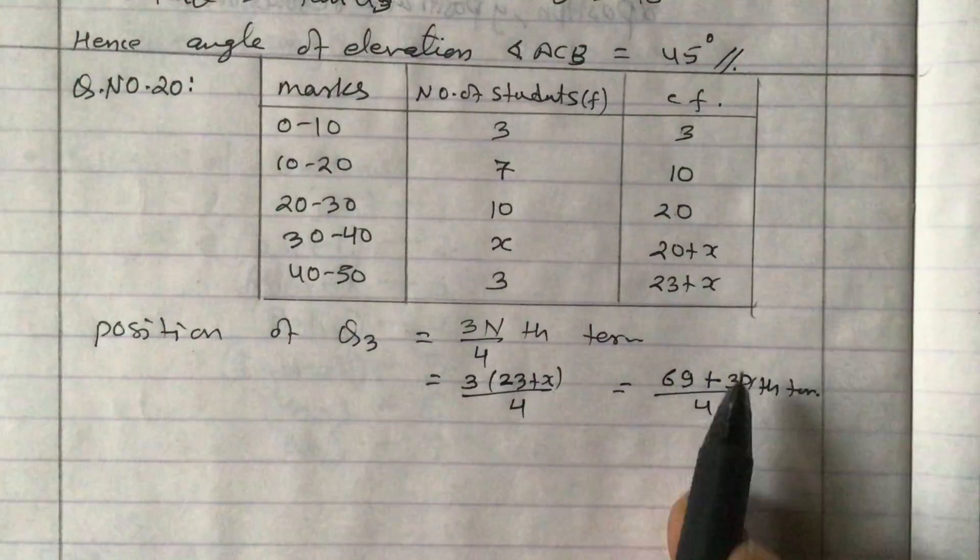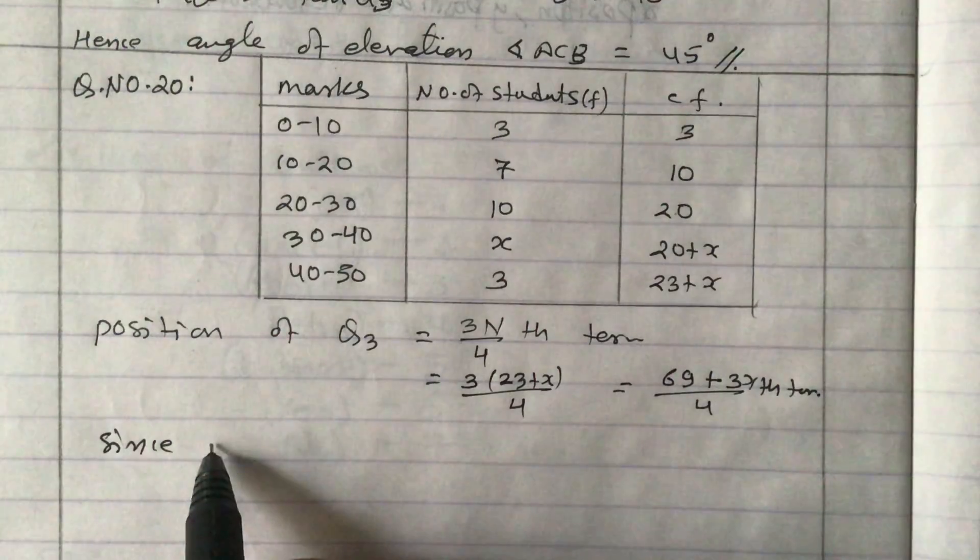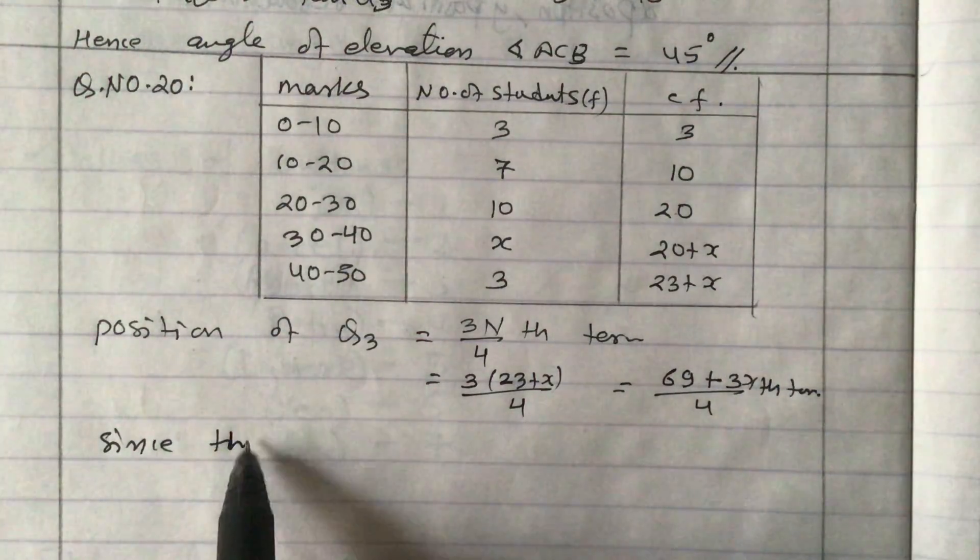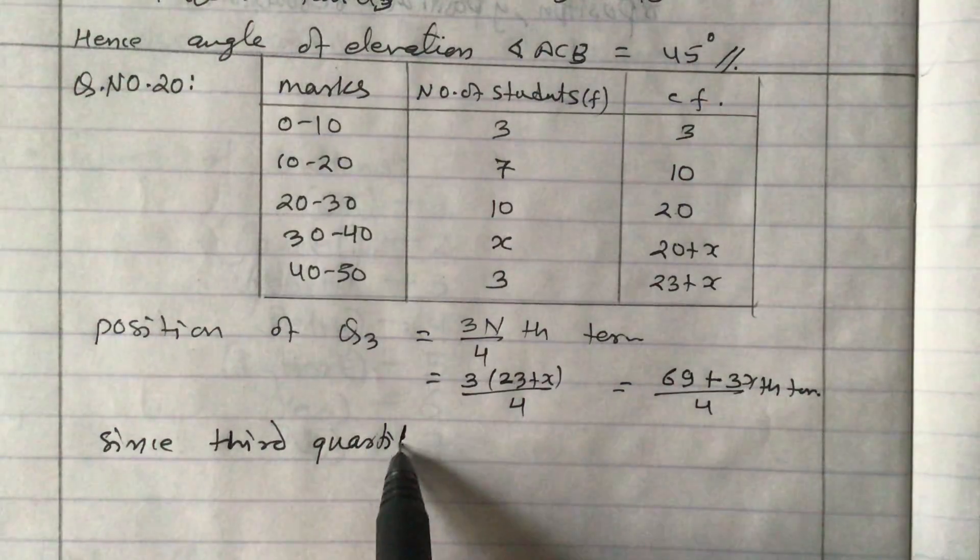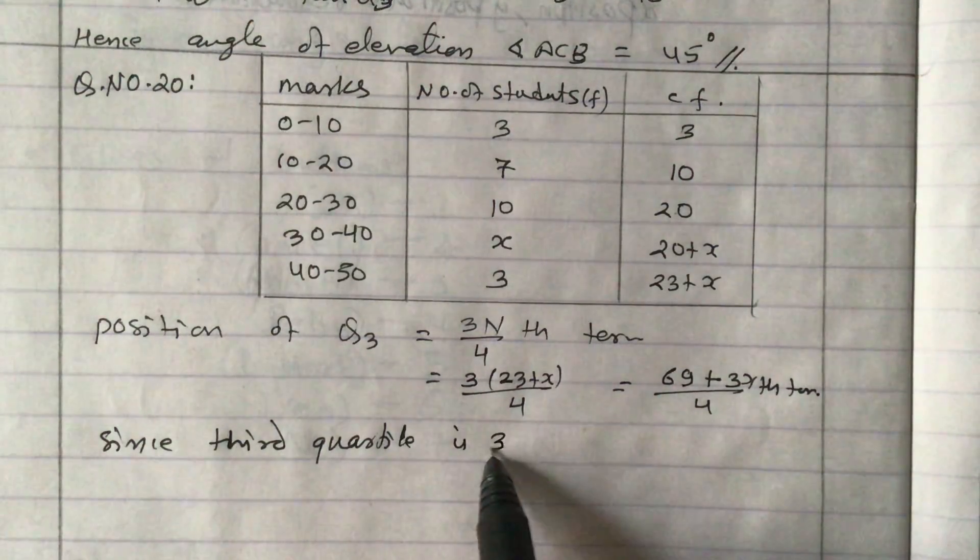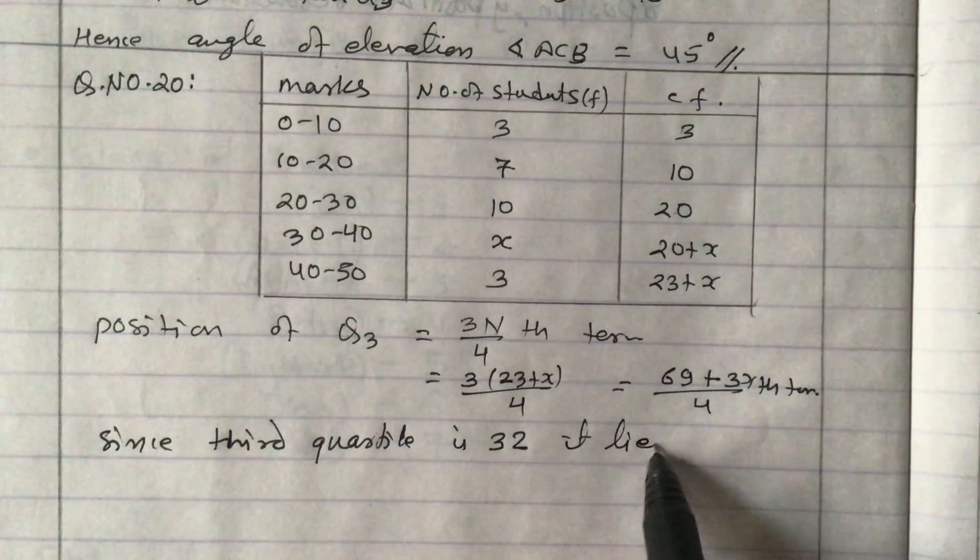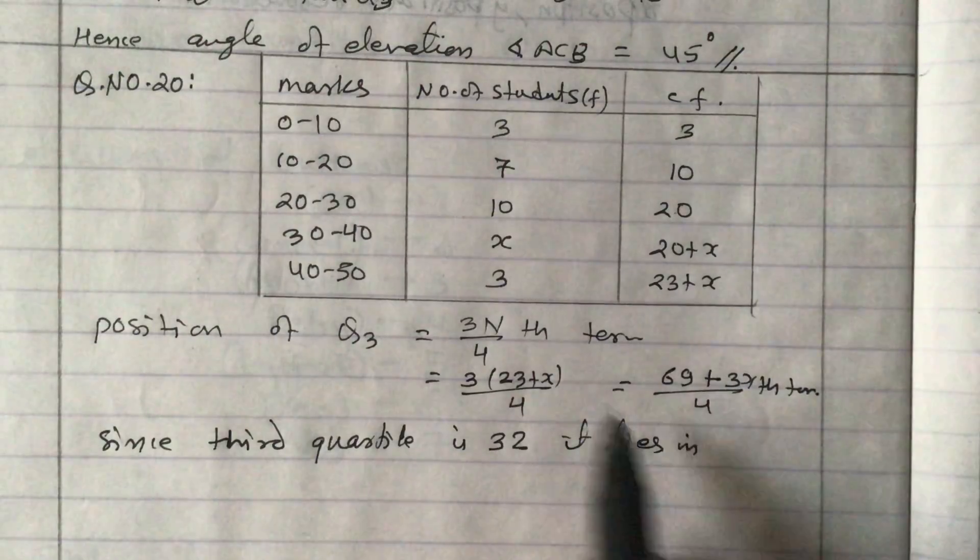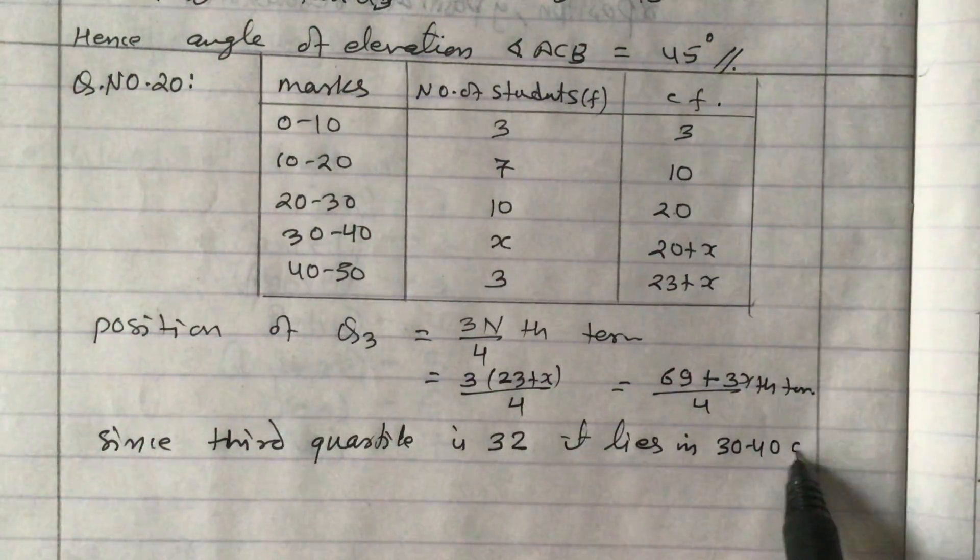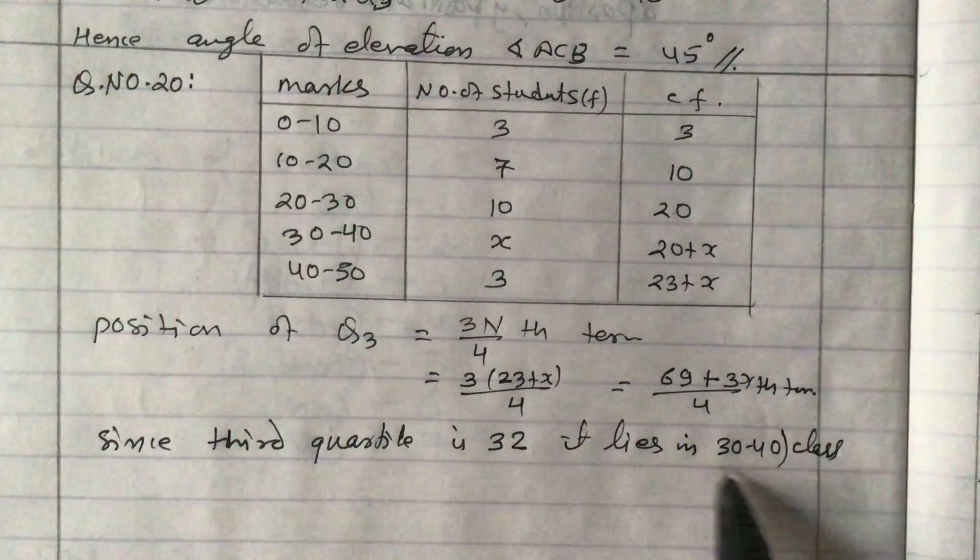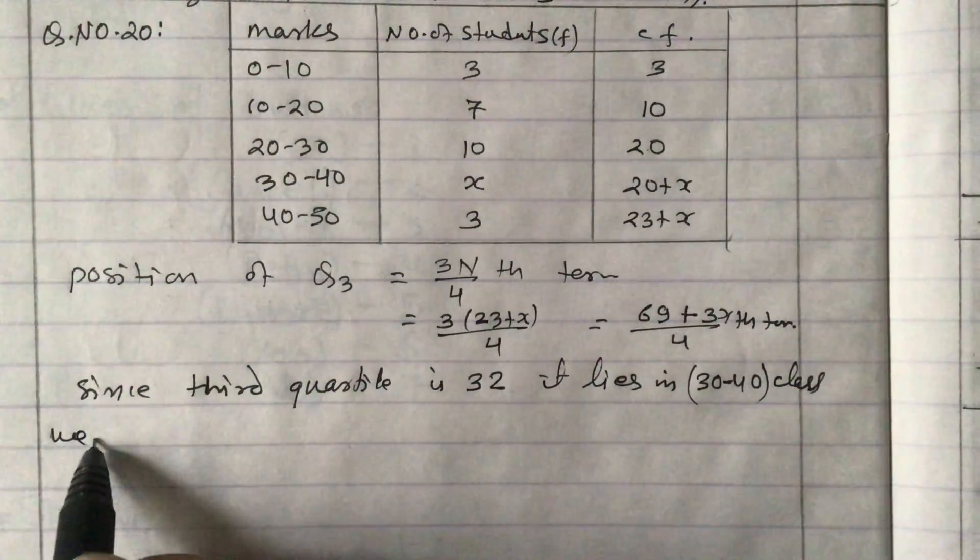Since third quartile is 32, it lies in the 30 to 40 class. So this is the quartile class, Q3 class.